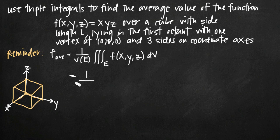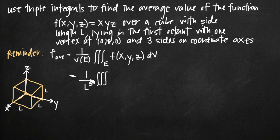The volume of this cube — we've been told the side length is l, so the volume is length times width times height, which is just l cubed. Taking our triple integral over the solid E, we need our limits of integration. For x we go from 0 to l, same thing for y from 0 to l, and same thing for z from 0 to l. So our limits of integration are 0 to l for each of our three variables.